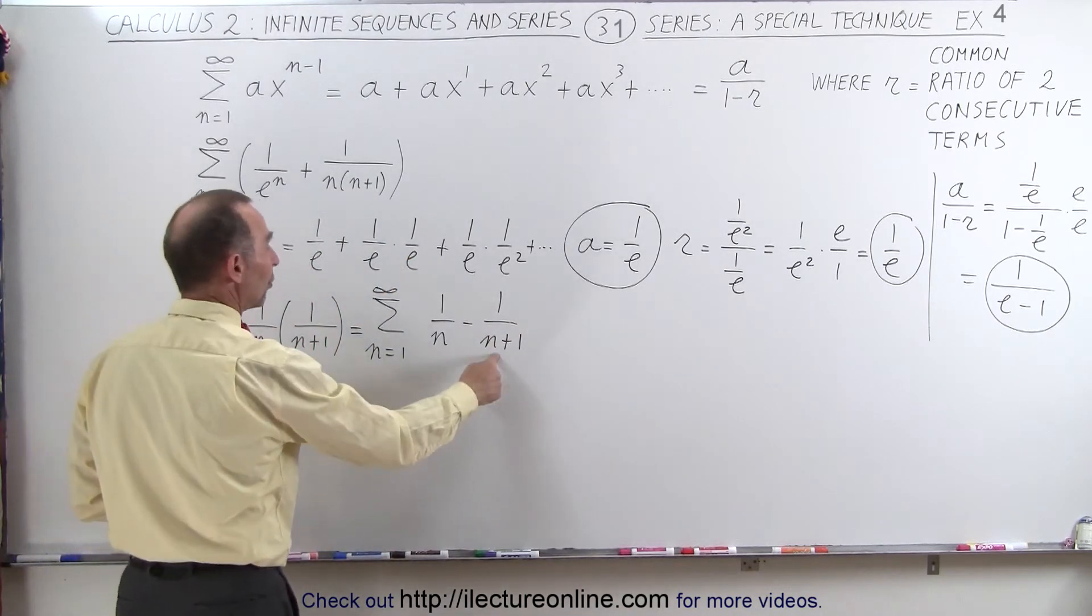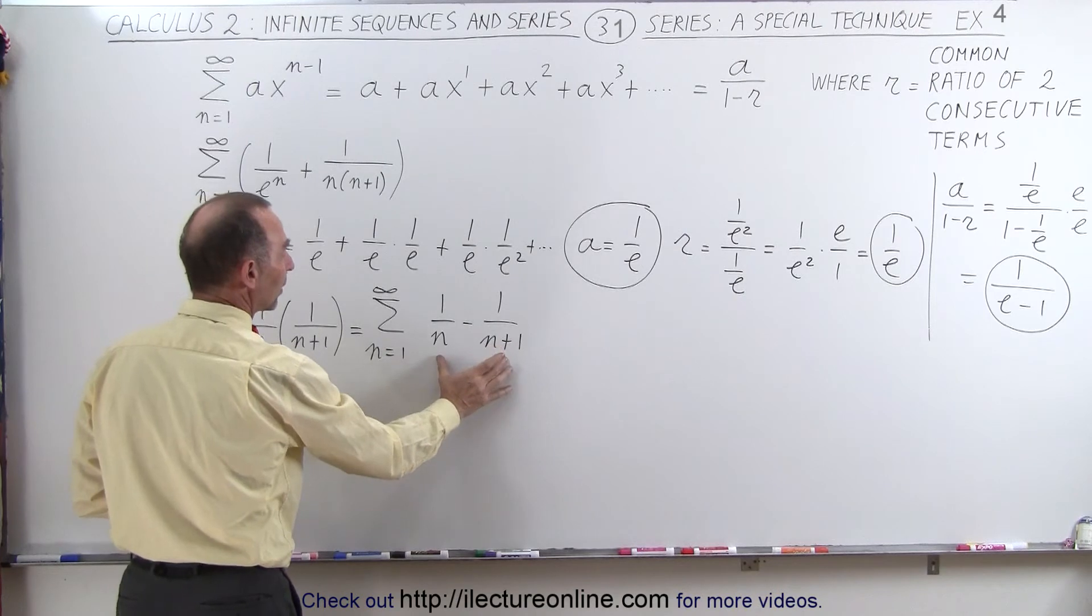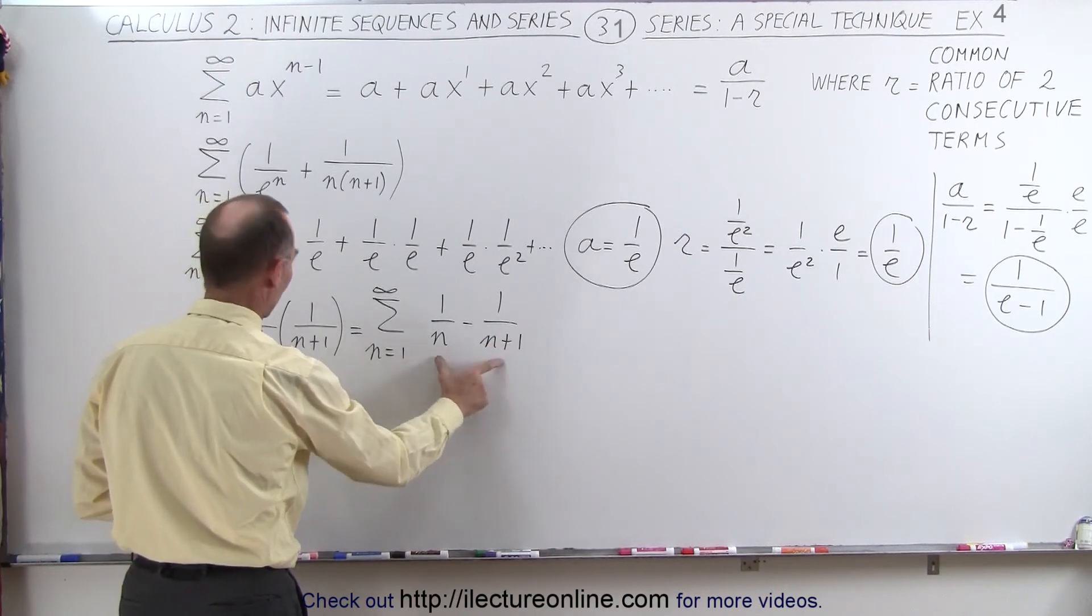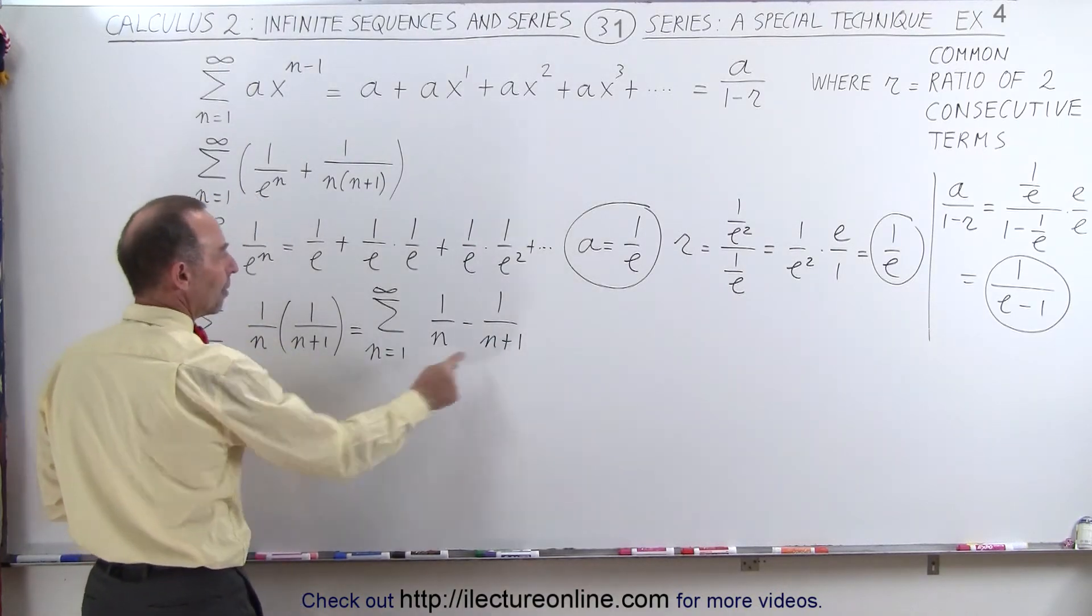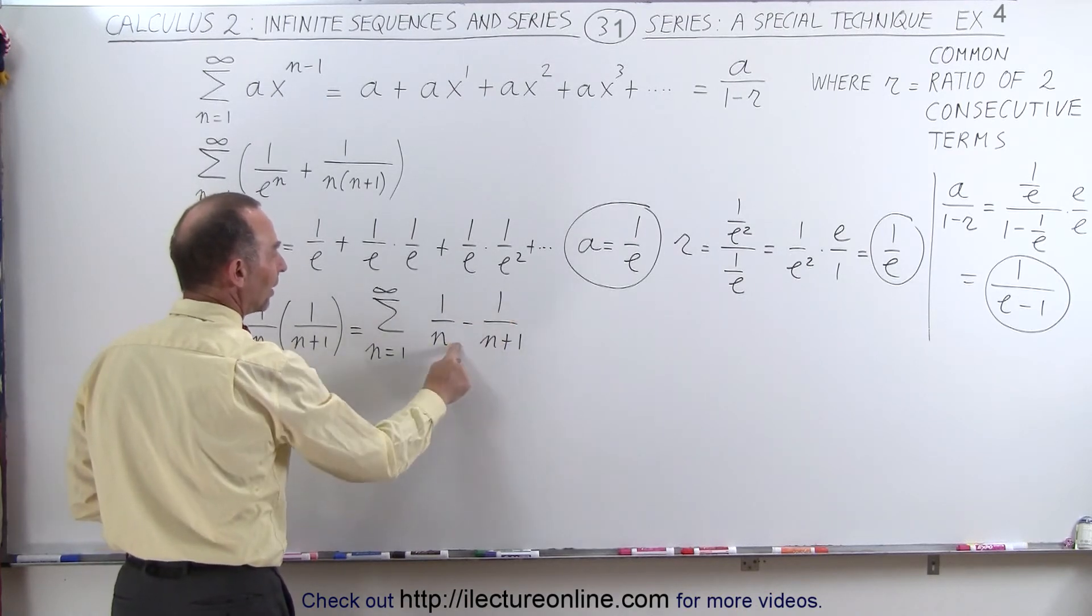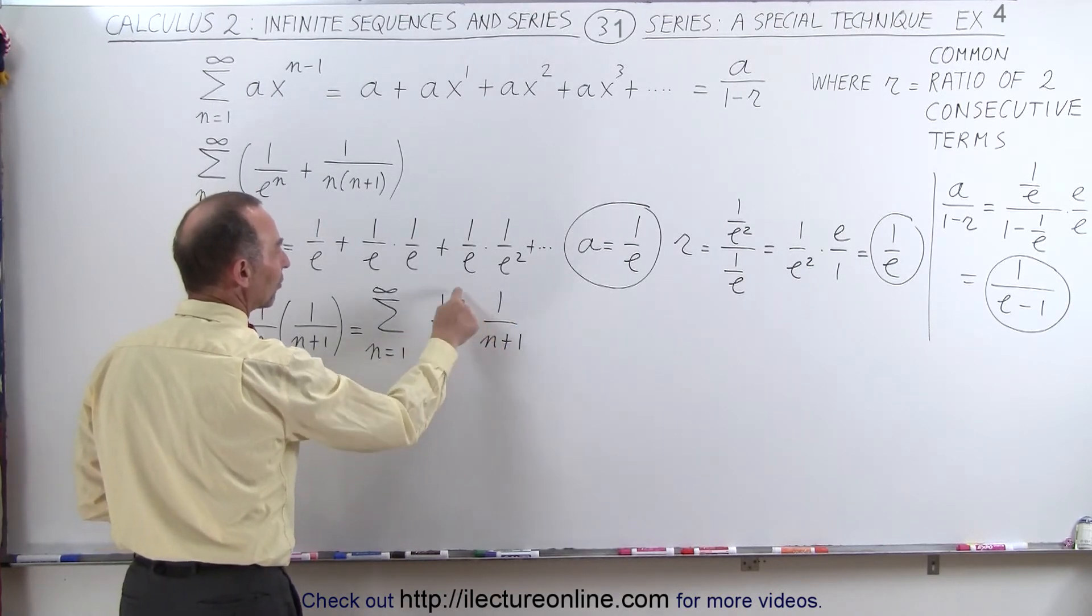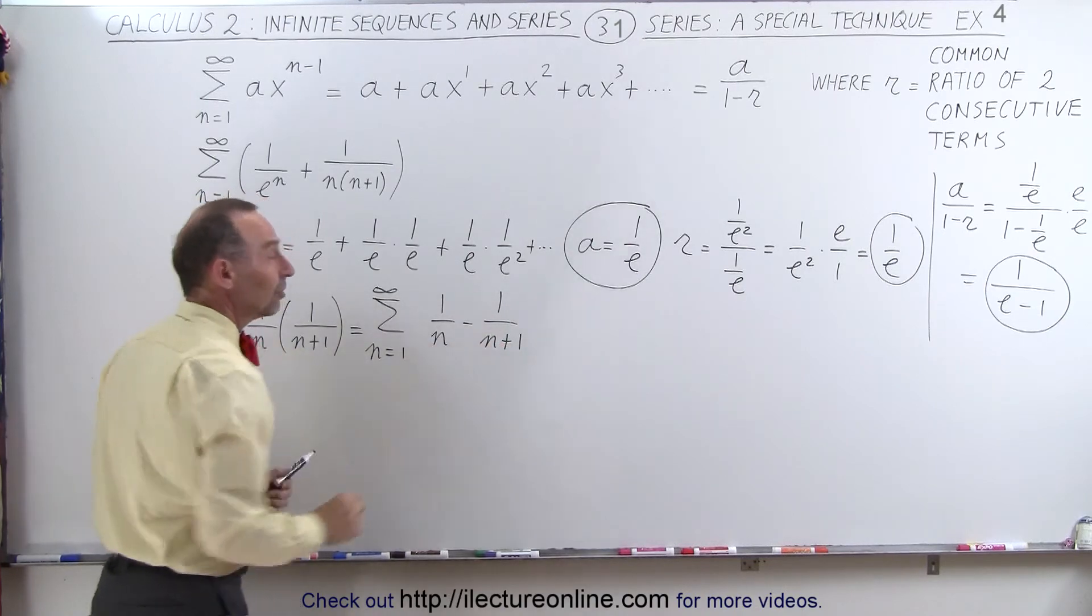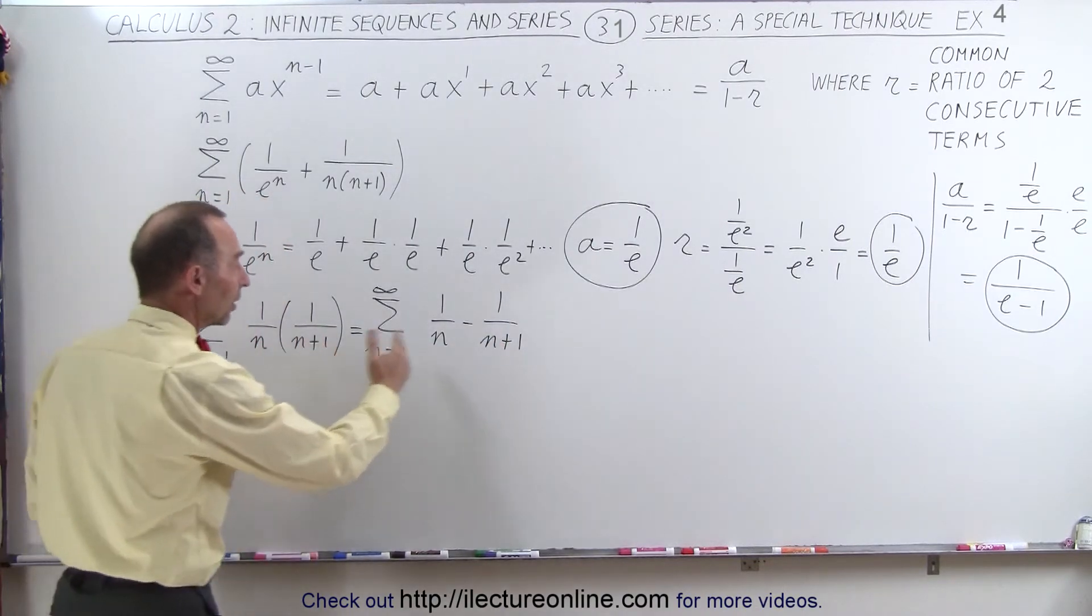Well, all we have to do is remultiply everything together. The common denominator is n times n plus 1, like we have over here. Multiply this one times n plus 1, multiply this one times n. n plus 1 minus n gives us 1 over the product of these two. So you can see that this can be written out like this.